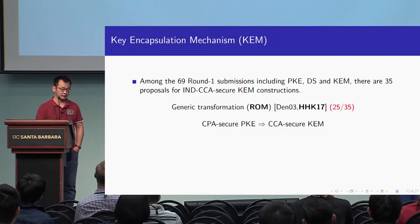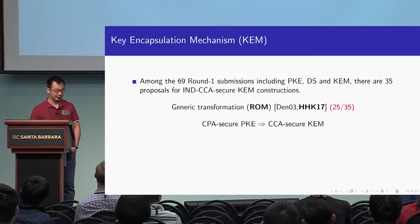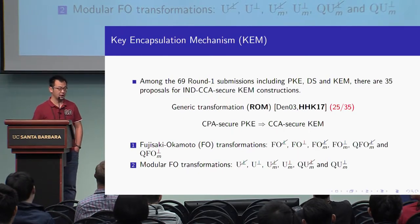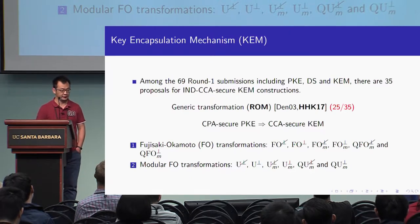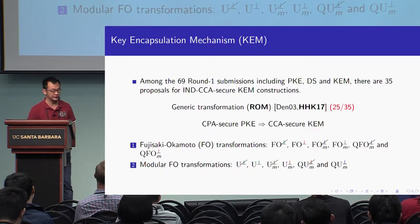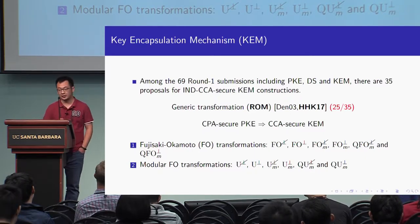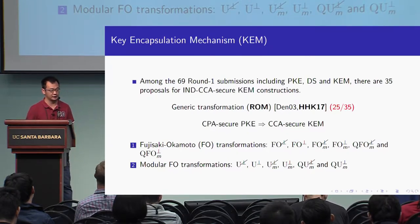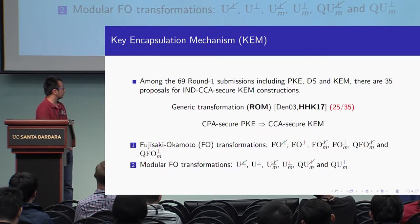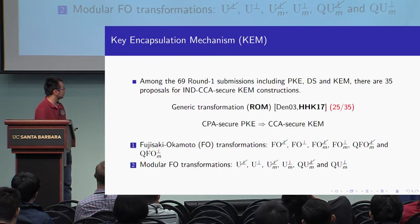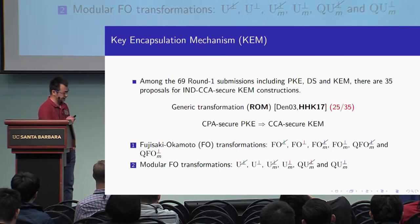The seminal work on these transformations was provided by Dent in 2003 and Hofheinz, Hövelmanns, and Kiltz in 2017. According to the state of the art, there are two categories of transformations. The first is Fujisaki-Okamoto (FO) transformations, of which there are many variants. Another category is modular FO transformations. When we use the symbol with a perp, it means that in the decryption algorithm, rejection is implicit; if we use the other symbol, rejection is explicit.